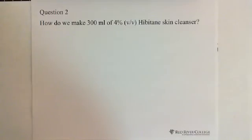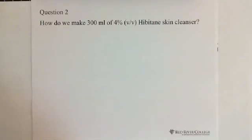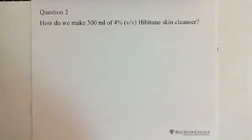The second question: How do we make 300 milliliters of 4 percent Hibitane skin cleaner? To make a solution with a liquid solute, we need to measure the amount of solute in a beaker, then add water to bring the total solution to 300 milliliters.